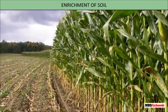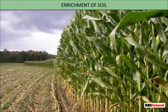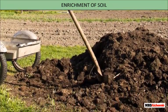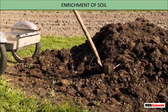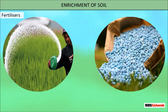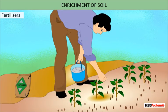As plants grow in a particular field year after year, the soil loses its fertility because the nutrients present in the soil get used up. In order to maintain the fertility of the soil, it needs to be enriched from time to time. Enrichment of soil is done by manure and fertilizers.